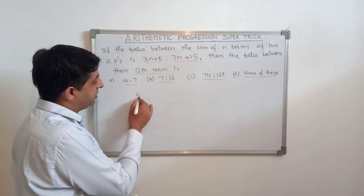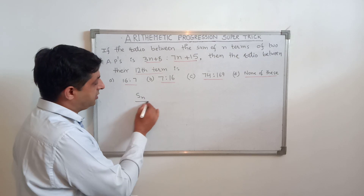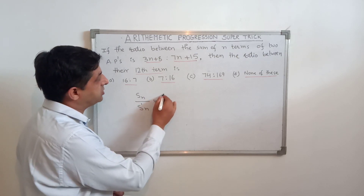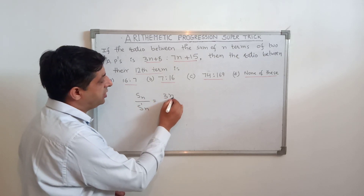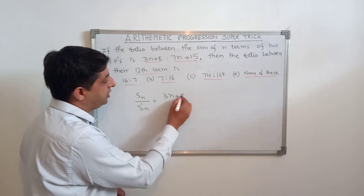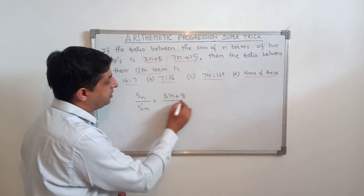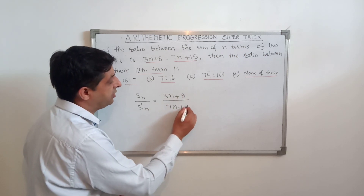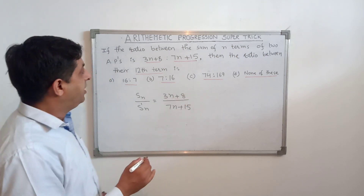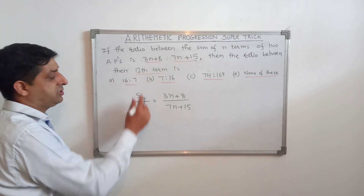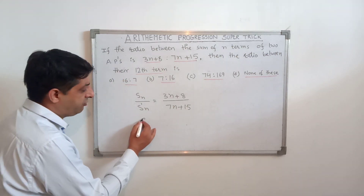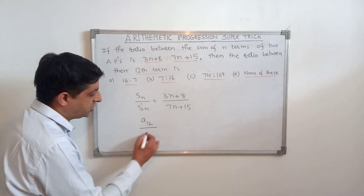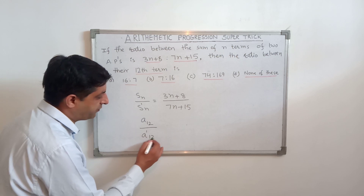Here we have given S_N / S'_N = (3N + 8) / (7N + 15), and we have to find the ratio of the 12th term, meaning we have to find A₁₂ : A'₁₂.